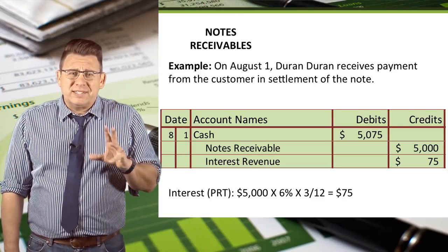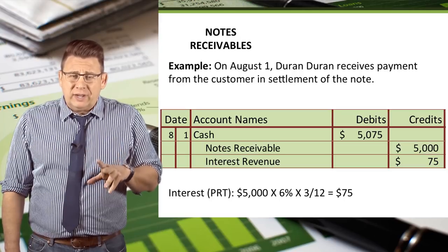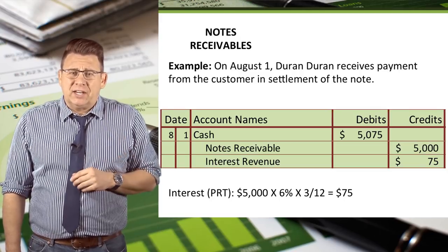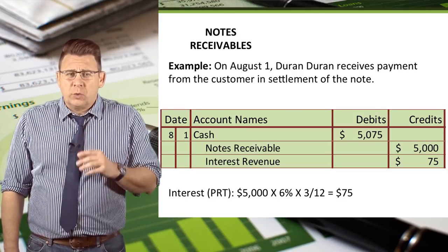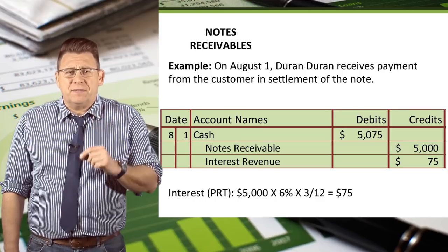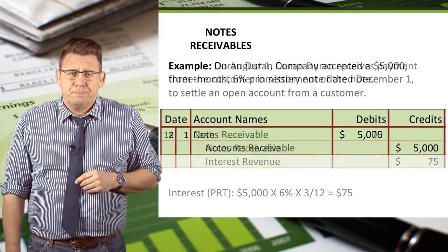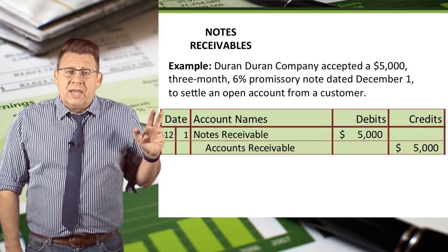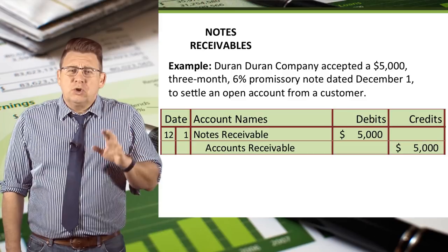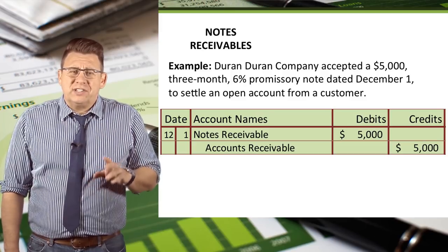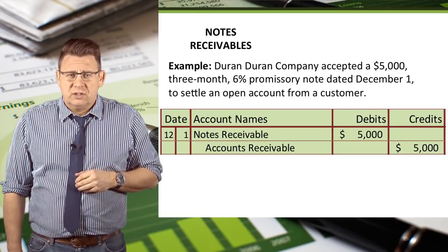So those are the basic entries for issuing and then settling a notes receivable. But before we wrap up this video, let's complicate this example just a bit. In this case, let's assume the transaction is dated December 1 rather than May 1.